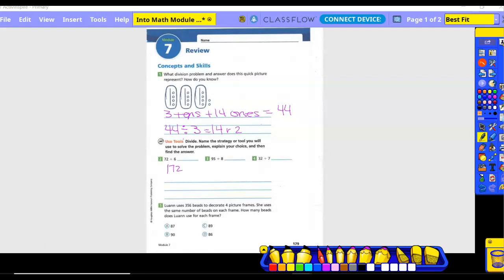So 72 divided by six. How many times does six go into seven? One time. So one times six is six. Seven minus six is one. Bring down the two. How many times does six go into 12? Two times. Two times six is 12. And nothing left over. Do I have anything else to bring down? No. So 12 is my answer.